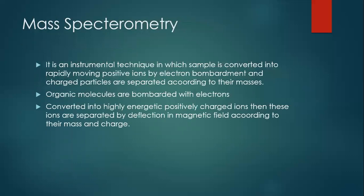Mass spectrometry is an instrumental technique in which a sample is converted into rapidly moving positive ions by electron bombardment, and charged particles are separated according to their masses. Organic molecules are bombarded with electrons and converted into highly energetic positively charged ions.